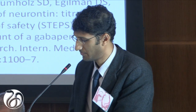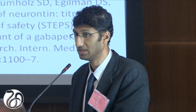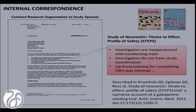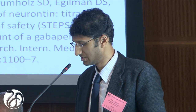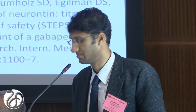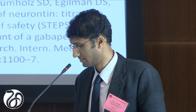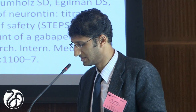What about correspondence? Joe Ross and colleagues looked at the internal correspondence related to the STEPPS trial of Neurontin. They encountered a letter from the clinical research organization conducting the study, written to Park-Davis, informing the sponsor of numerous problems with the data. The CRO noted that investigators were inexperienced with conducting trials, that they did not have study coordinators, and that training for completing the case report forms was minimal. The lesson here is that it's not measurements taken within the trial that tip us off to these problems, but a letter written about the trial, which allows us to understand that data quality may be severely deficient.